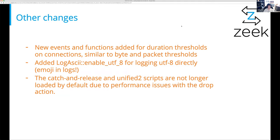Some other changes that didn't fit other categories: new functions for duration thresholds, similar to how packet thresholds worked before — you can find names for those in the 3.0 changelog. One of Seth's favorites: you can now enable UTF-8 in your log files, which means you can happily write emoji to your log files — smiley faces and the poop emoji do actually work. Also, the catch-and-release and Unified2 scripts are no longer loaded by default due to significant performance issues with the drop action. They still exist and you can load them in, but know there will be some performance hits.